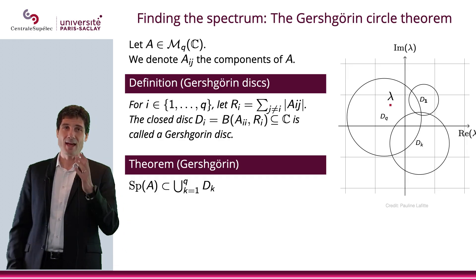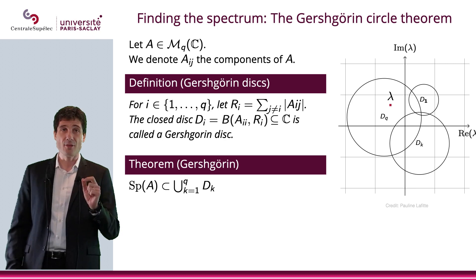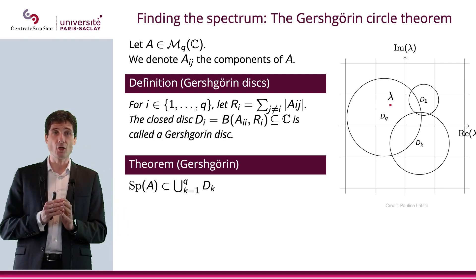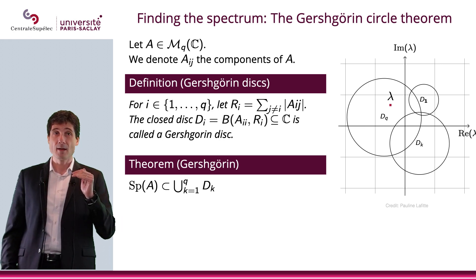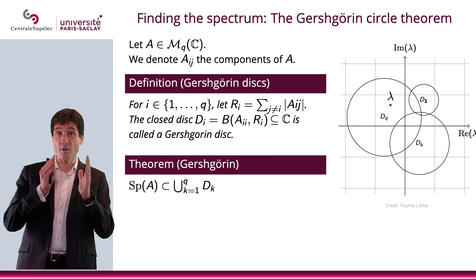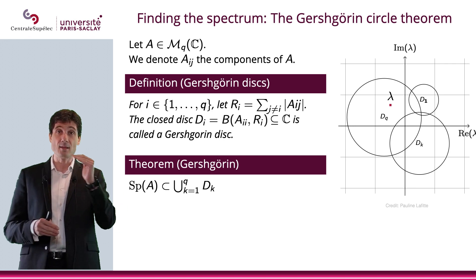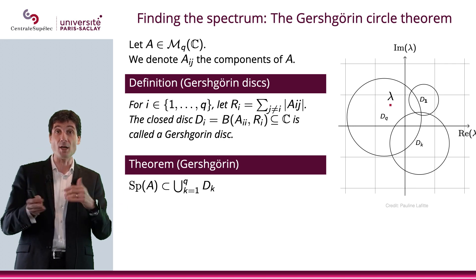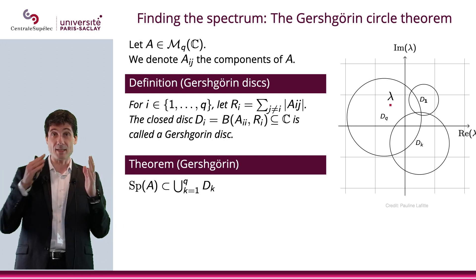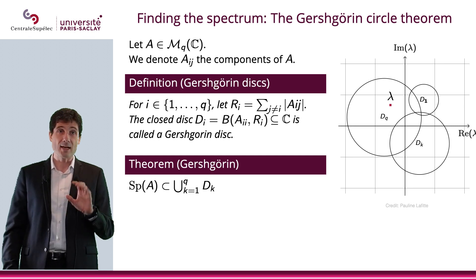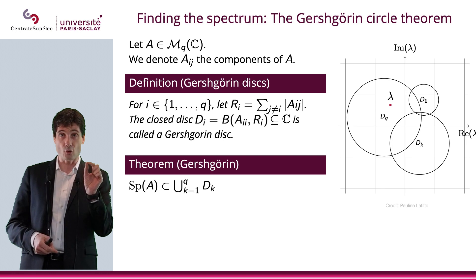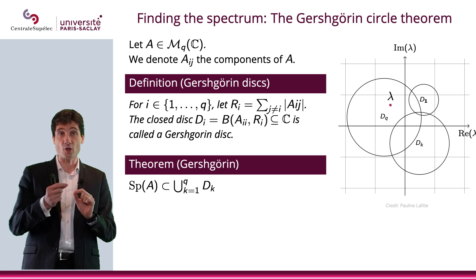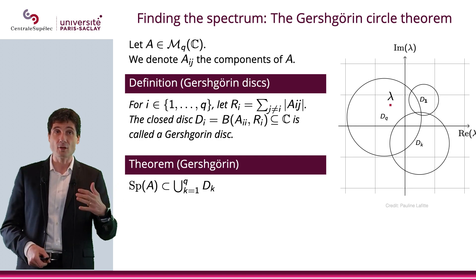I'm going to consider a matrix A and denote A_ij the components of A. The Gershgorin circle theorem says this: for each row i, I compute a coefficient R_i, which is the sum of the absolute values of all components of that row, excluding the diagonal term A_ii. I then define a closed disk D_i centered at A_ii — the diagonal term of row i — with radius R_i. That disk is called the Gershgorin disk.